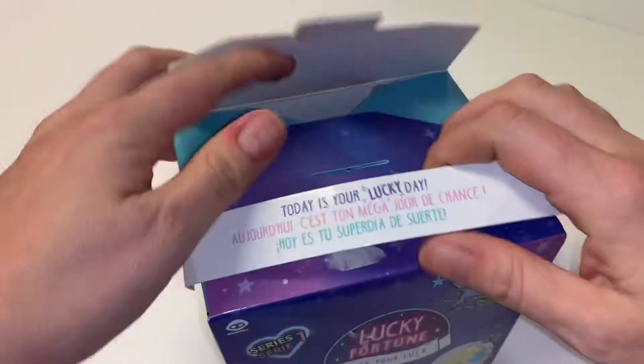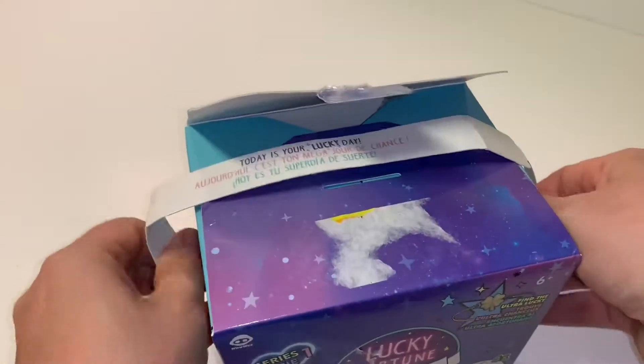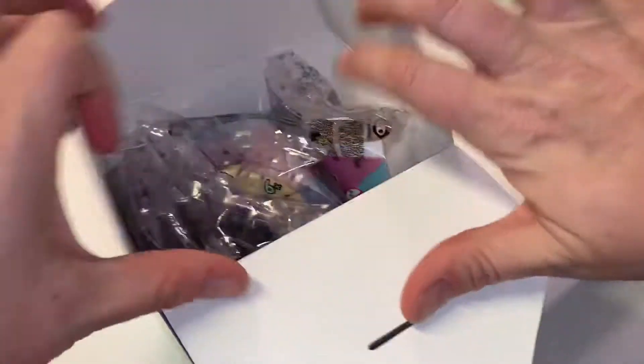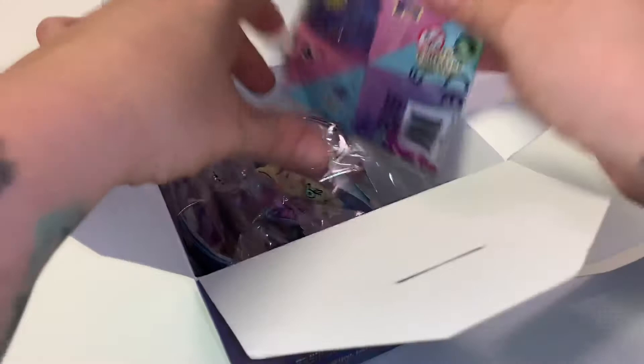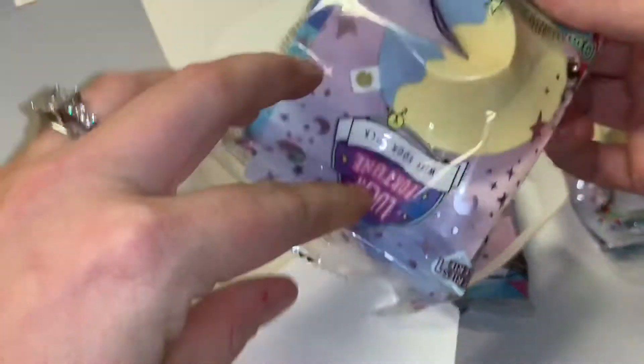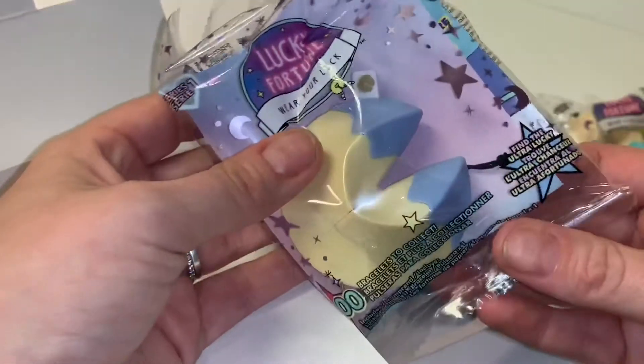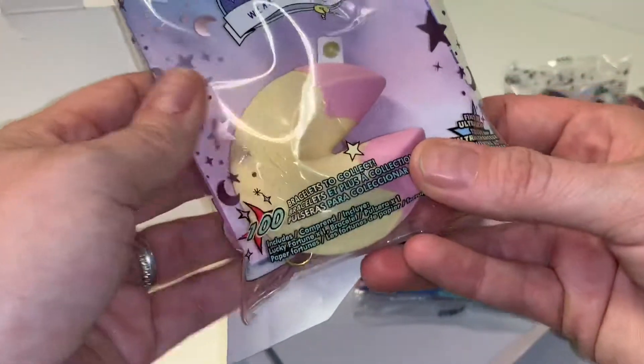Sticker off the top there that shows how much I paid for it. Pull this out. All right. So we do have four packages in here. We got a purple, we got a blue fortune cookie. We got a lavender color, sort of bluish purplish, and a pink fortune cookie.